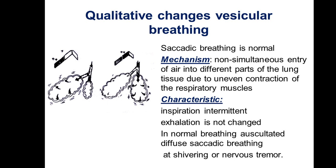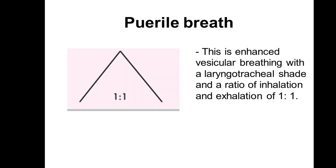One type of qualitative change of vesicular breathing is saccadic breathing. It is formed because of non-simultaneous entry of air into different parts of lung tissue due to uneven contraction of the respiratory muscles. It is characterized by an intermittent inspiratory phase, but exhalation is unchanged. In normal breathing, diffuse saccadic breathing may occur with shivering or nervous tremor. Puerile breathing is enhanced vesicular breathing with a laryngotracheal character, and the ratio of inhalation and exhalation are equal. It may occur in children up to 7 years old.